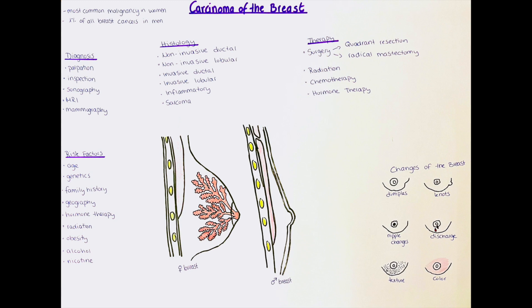First of all I would like to recap some basic anatomy of the female breast. The breast consists of connective tissue and mammary glands. The mammary glands are essentially modified sweat glands that are structured into ducts and lobules. The lobules are the secretory units of the breast, and they join together to form lobes.